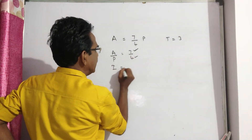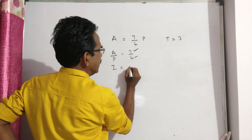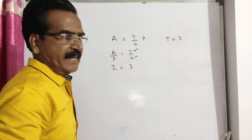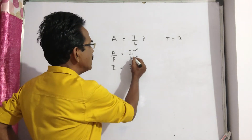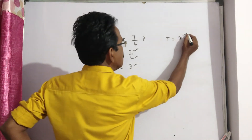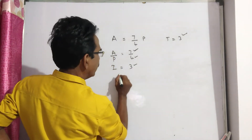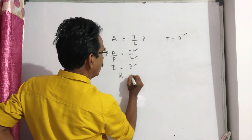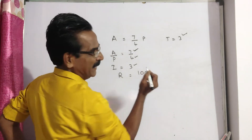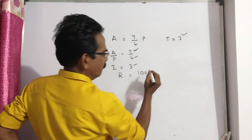So what is interest? 7 minus 4 — interest is 3. So P is known, I is known, T is known, you can find R. R is equal to 100I by PT.